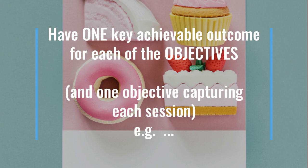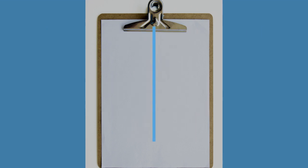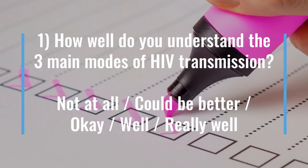A neat way of doing this is putting one objective for each session you're delivering. For example, on a training day split into four key sessions, have one objective addressing the outcome of each session. Here's a good example: if a day was training on HIV awareness, one of the outcomes might be an understanding of the modes of transmission of HIV. You teach those modes and your evaluation tries to explore how well they understand them.